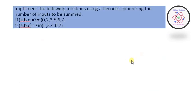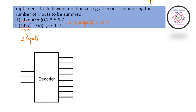The next question asks us to implement functions using a decoder while minimizing the number of inputs to be summed. We have two functions F1 and F2, with three input variables A, B, C, so we use a 3-to-8 decoder. Instead of using an OR gate, I will complement the function F and represent it in terms of the NOR gate.